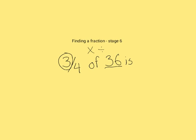The first thing we need to do is divide 36 by 4. That will give us how much each quarter is worth. 36 divided by 4 is equal to 9, 4 being our denominator.